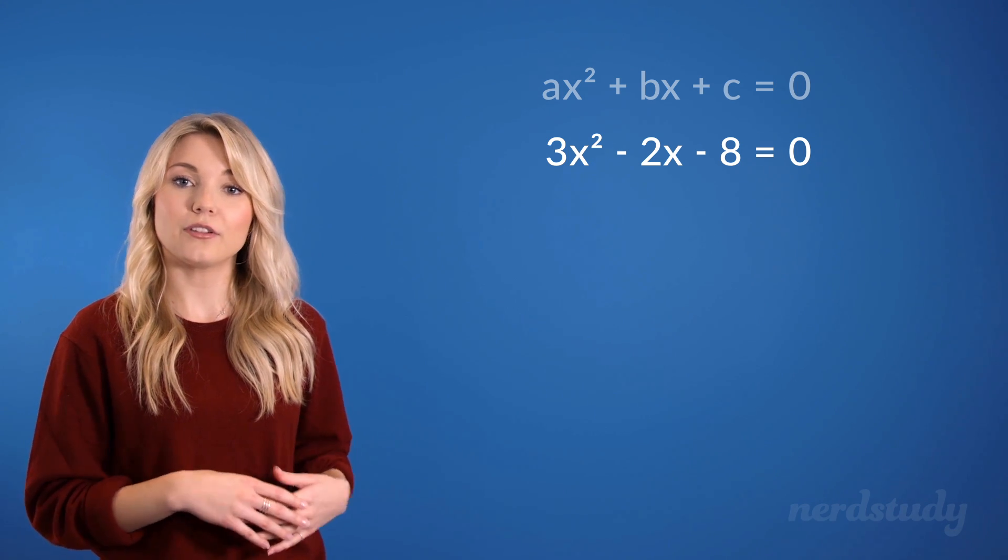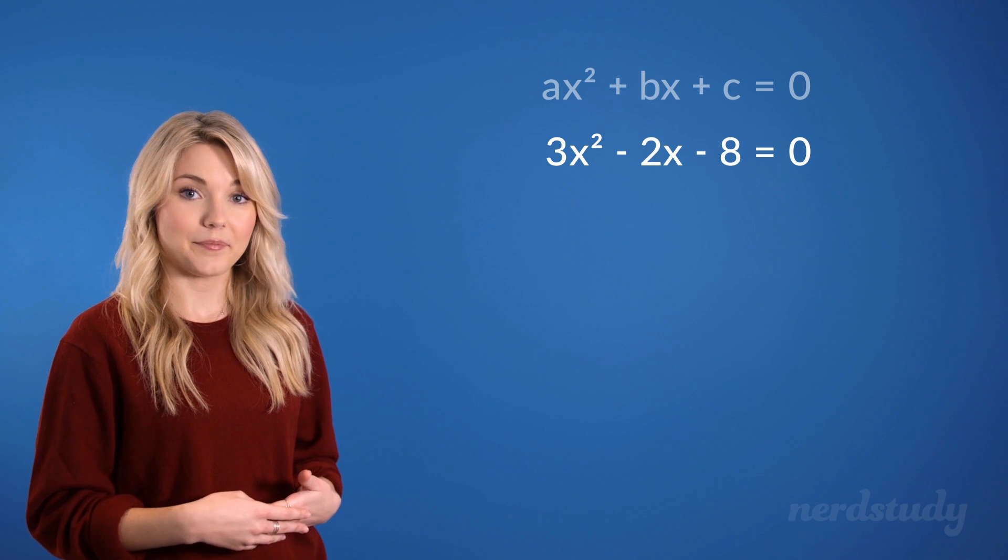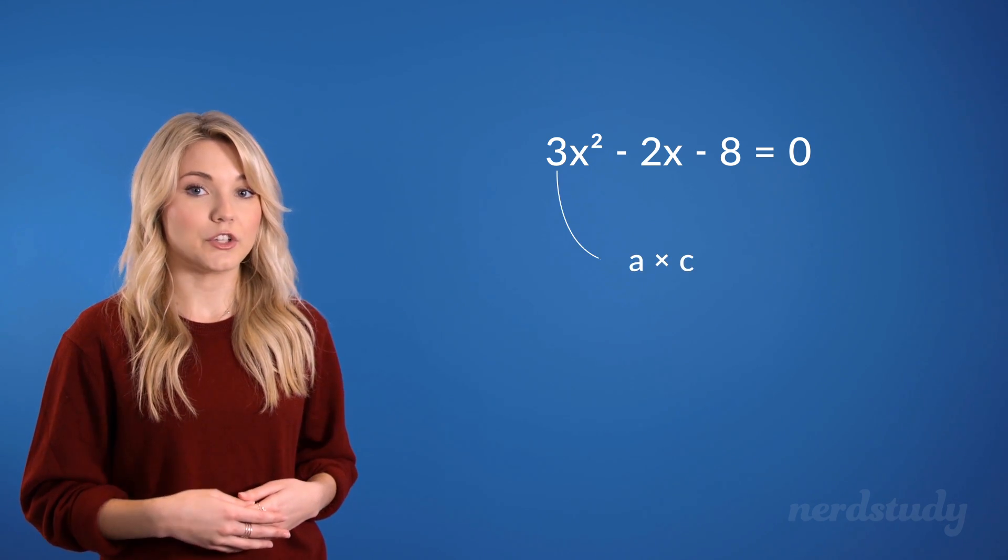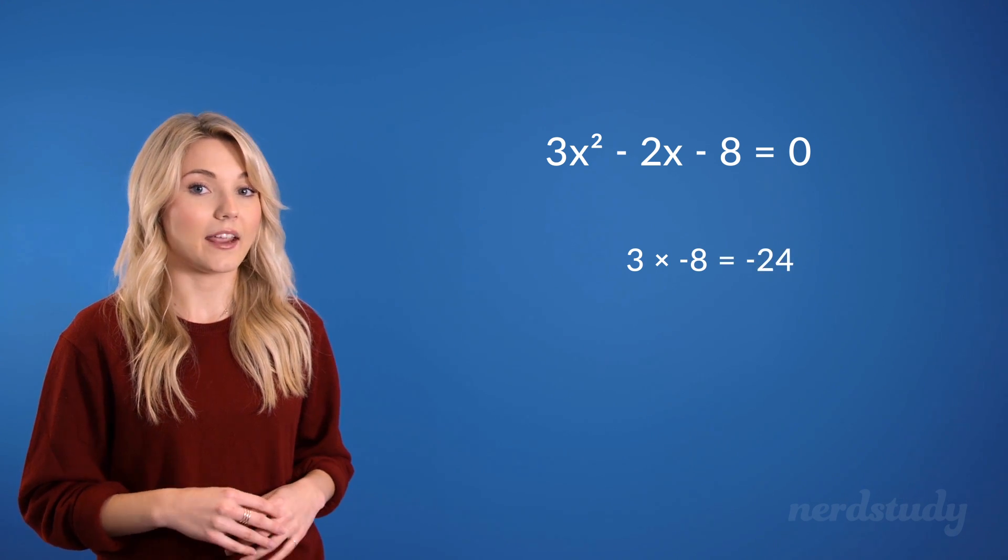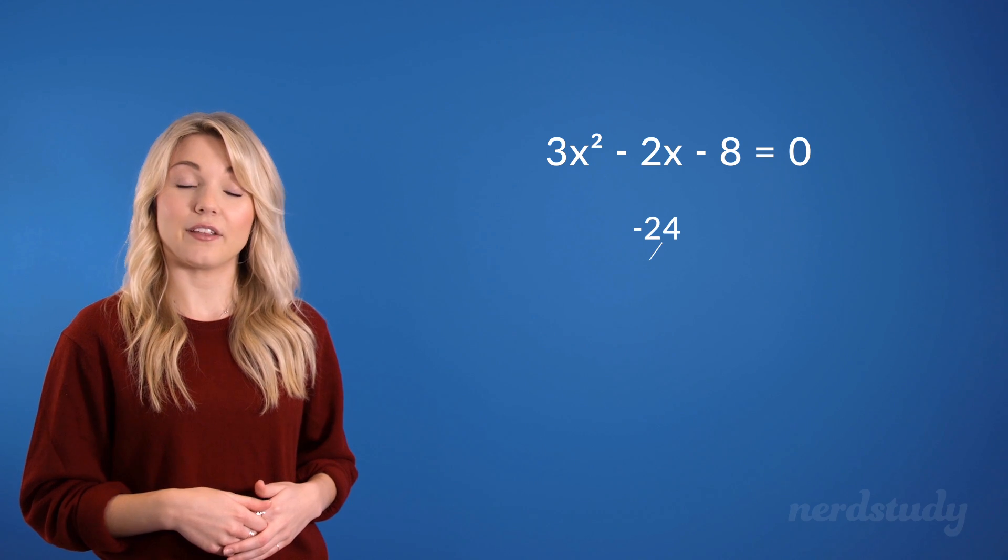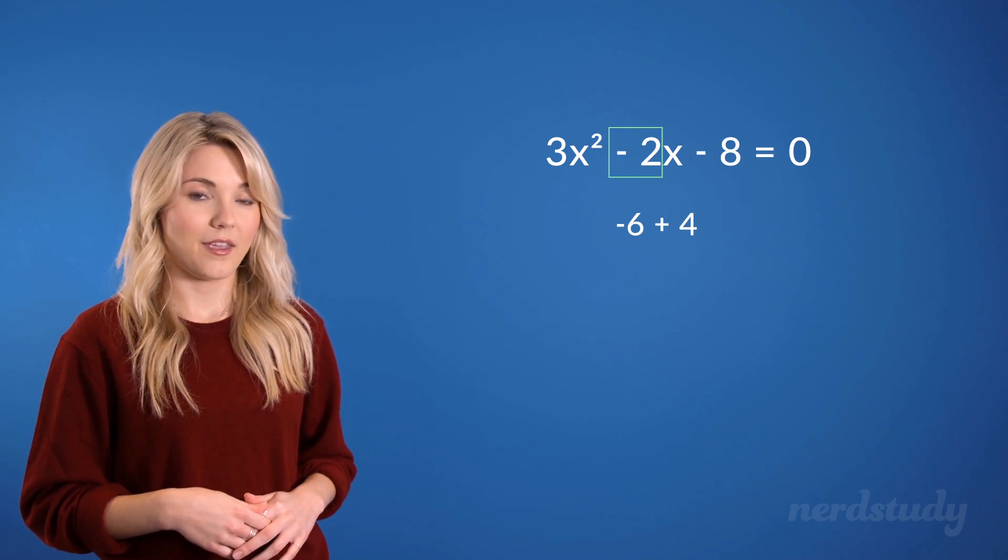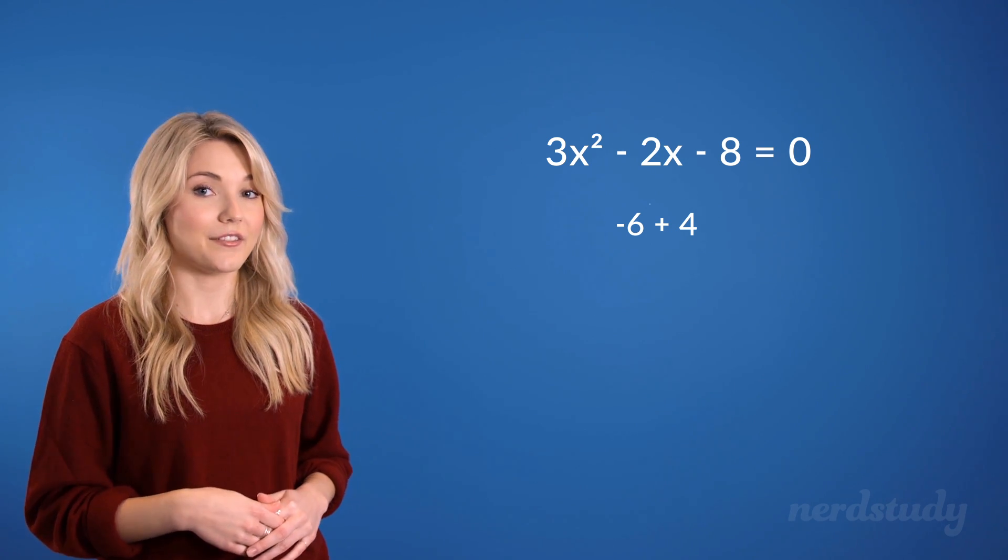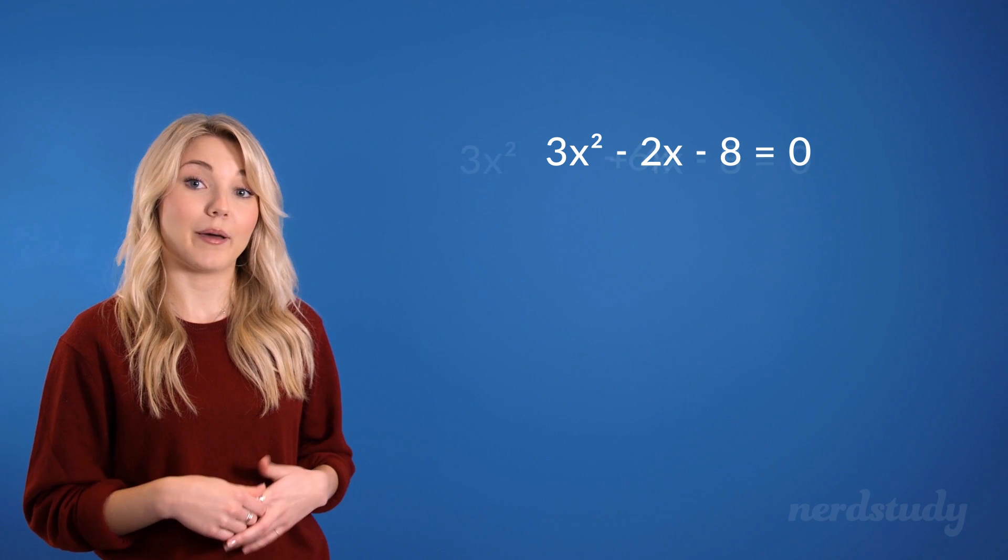So first, we would need to look for factors of A times C that would add up to be B. A times C, which in this case is 3 times negative 8, is equal to negative 24. Two factors of negative 24 are negative 6 and 4, which add up to become negative 2. Thus, we take the numbers negative 6 and 4 as our guidelines, and we manipulate the equation by writing this.